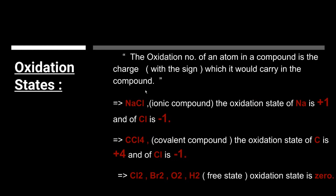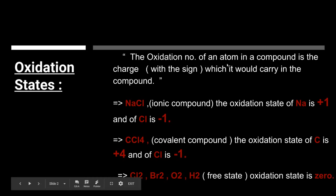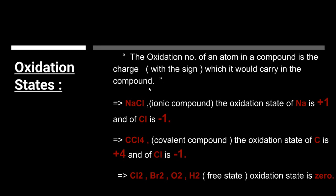Hello students, this video is about the oxidation states and the trends of the oxidation states in the periodic table. So let's start with the definition. The oxidation number of an atom in a compound is the charge with the sign which it would carry in the compound. The oxidation number is the charge on an atom which it would carry in a compound.